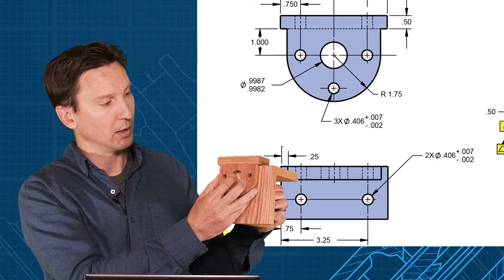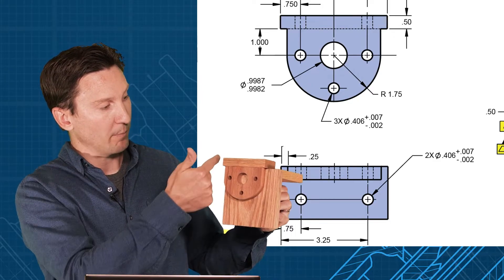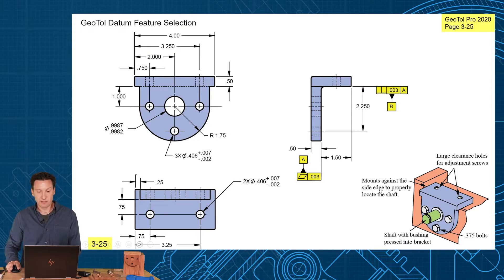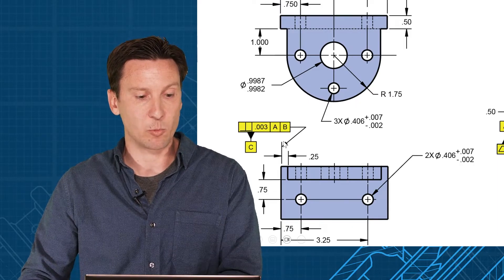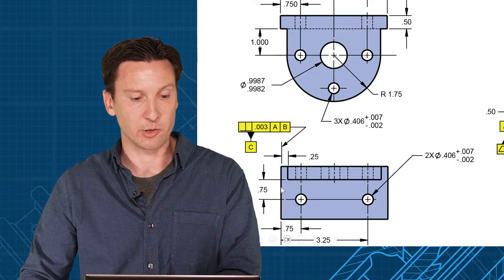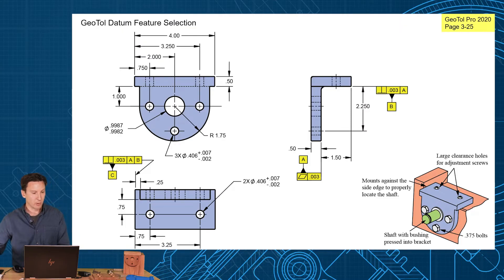What keeps it from moving? Well, a hole could do it, but if you notice in the note, it says mounts against the side edge to properly locate the shaft. That's setting a leader and a follower. The leader is that side edge, the follower is that hole. So that clue is going to tell us we want this as our tertiary datum feature C. So our datum reference frame for our part is going to be aligned on this bottom edge B and up against this side edge C.